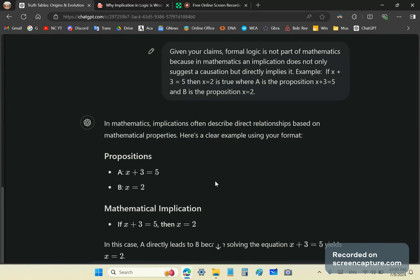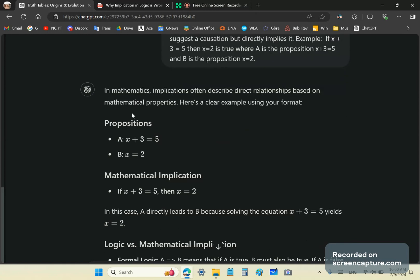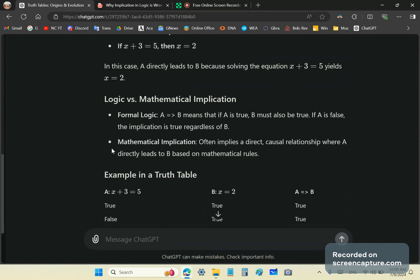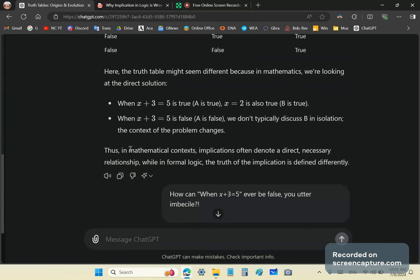GPT says in mathematics, implications often describe direct relationships based on mathematical properties. It goes through the example and it says when x plus 3 equals 5 is true, then x equals 2 is also true. And then it says when x plus 3 is equal to 5 is false. Just stop and pause there.